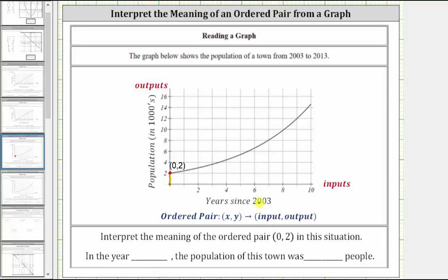Remember, the input of zero represents the number of years since 2003, so because the input is zero, the year is 2003, and because the output is 2, the population is 2,000.